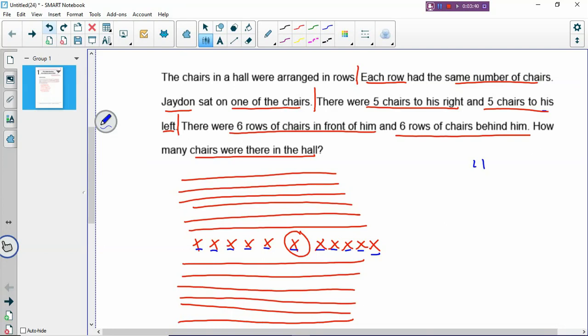And how many rows are there altogether? So you have 1, 2, 3, 4, 5, 6, 7, 8, 9, 10, 11, 12, 13. So you have 13 rows altogether. So how many chairs are there in the hall? You have 13 rows of 11, so 13 times 11. You will get 143 chairs. And that's how you solve this simple problem through the method called draw a diagram.